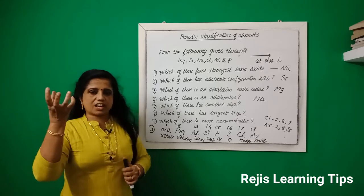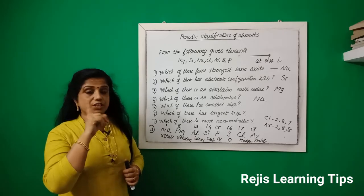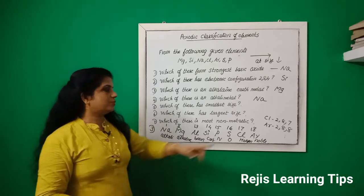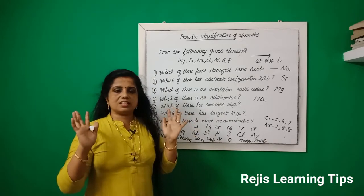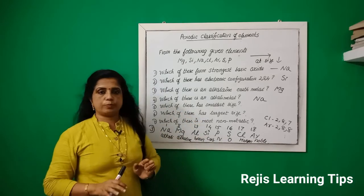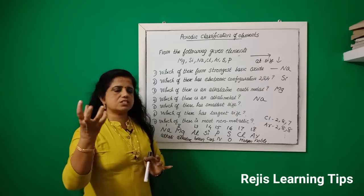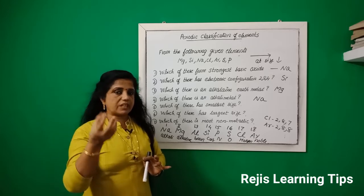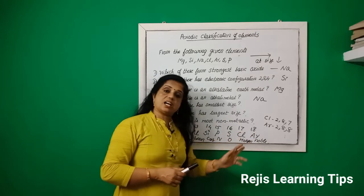Chlorine has 7 electrons in the outermost shell. It needs just one electron to complete the octet configuration of 8 electrons. Because of this, if chlorine wants to gain an electron, it is strongly attracted to the nucleus. The electrons are held very tightly by the nucleus. So, chlorine has a small size.